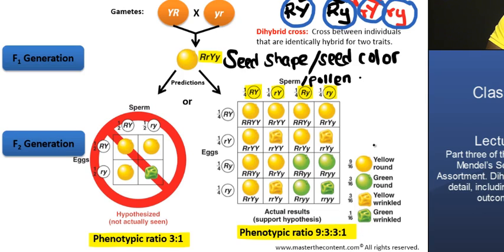The largest number comes from the most dominant phenotype — yellow and round. Green round and yellow wrinkled each have a ratio of 3. The fully recessive phenotype, green wrinkled seeds, has a ratio of 1. So: 9 yellow round, 3 green round, 3 yellow wrinkled, and 1 green wrinkled.